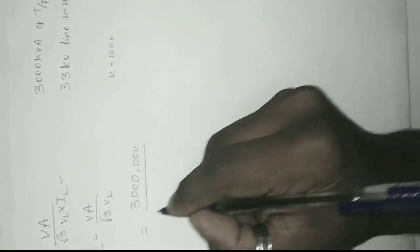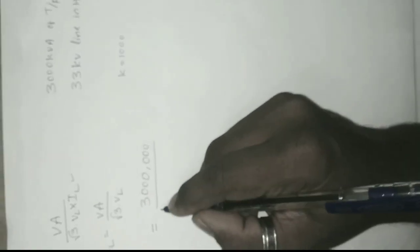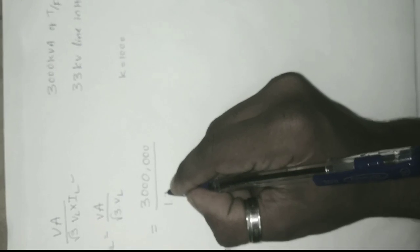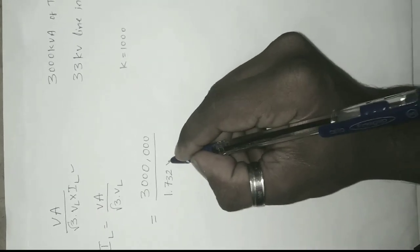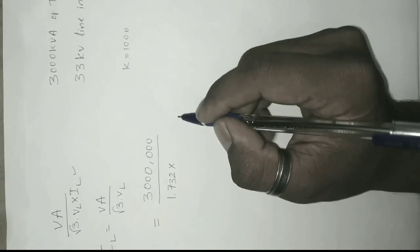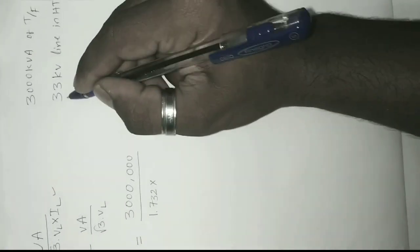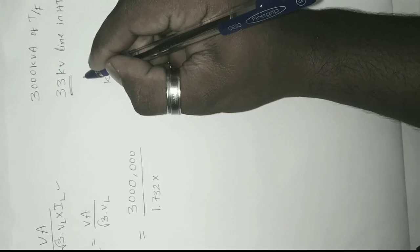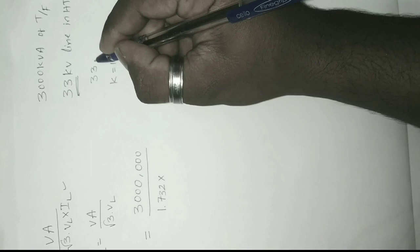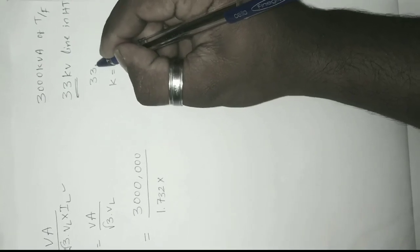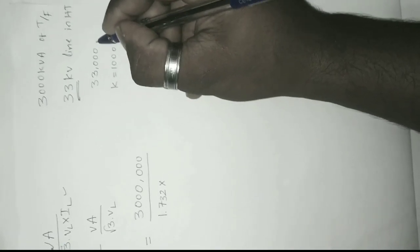By the root of 3, root 3 means 1.732, into IL. IL means 33 kV line, 33 kV. K means 1000, convert into volts: 33,000 volts.